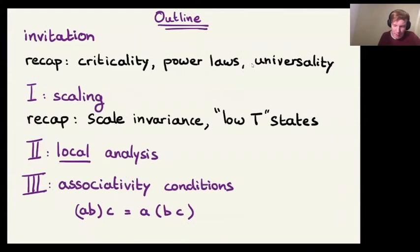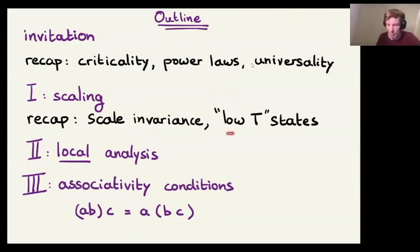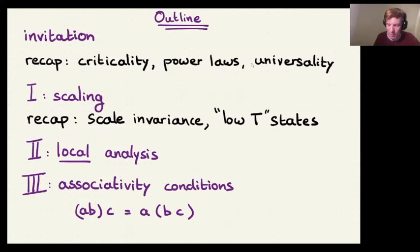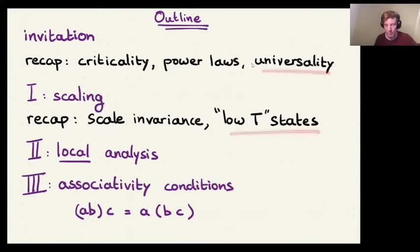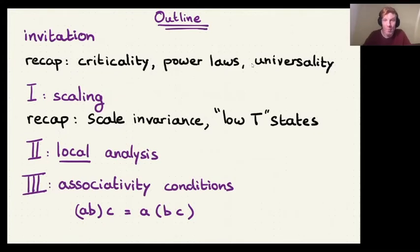The connection between shared low-T phase spaces and identical critical exponents is explained by the renormalization group, pioneered by Kadanoff and Wilson, which shows why the low-T configurations are so effective in characterizing the system. This finishes part one on scaling.